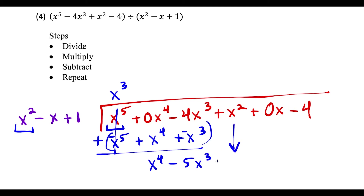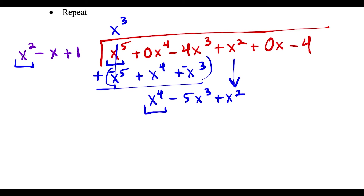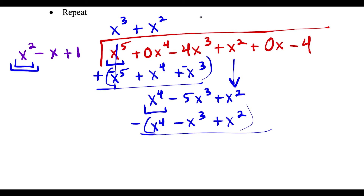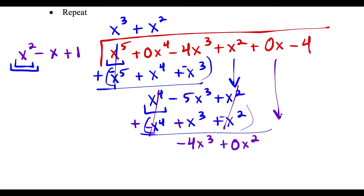The process continues: x to the fourth divided by x squared gives x squared. Multiplying: x to the fourth, then x squared times minus x is minus x to the third, and x squared times 1 is x squared. Subtracting with keep, change, change — these cancel. Minus 5x to the third plus x to the third makes minus 4x to the third, and x squared plus negative x squared cancels, leaving a 0x squared placeholder. Drag down plus 0x.